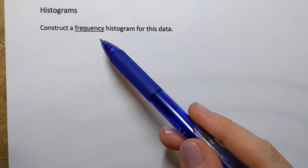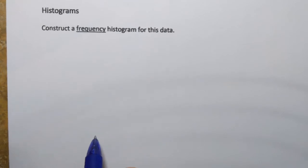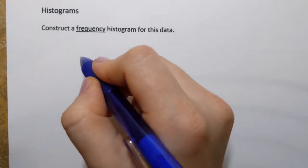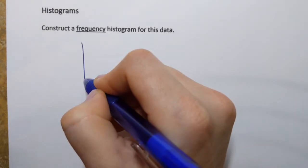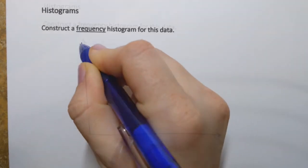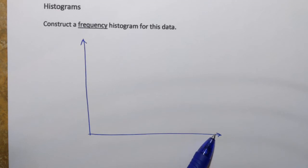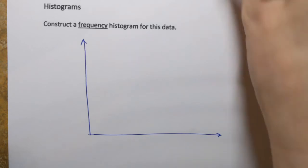We start constructing this graph by setting up the horizontal and the vertical axis. The horizontal axis will always be related to our data set and the way we're going to label the horizontal axis is by taking the lower class limits of the classes and placing them along this number line.